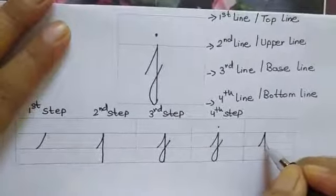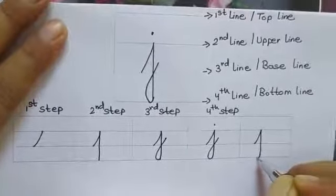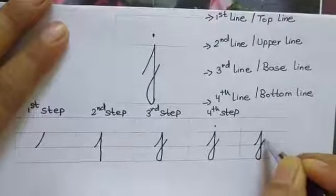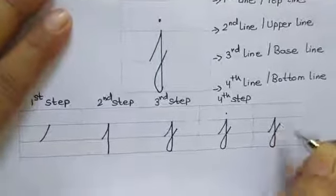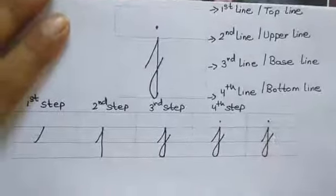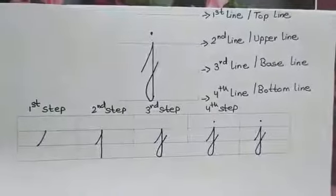Then come down straight to the fourth line. Next, forming a loop, turn it back up to the third line and finish a little above the third line and a dot on the top. So children, this is how we write small cursive J.